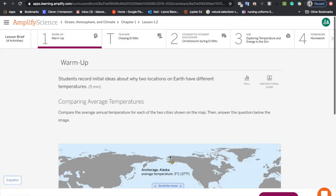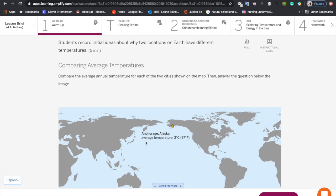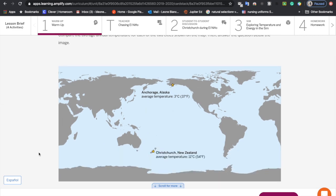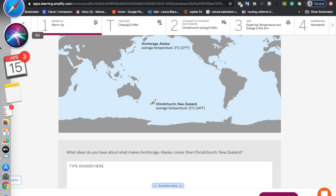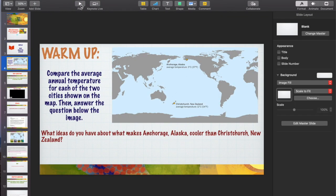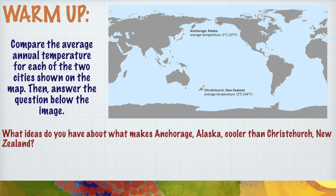We're going to start with the warm-up. At this time, I want you to compare the average temperatures for each of the two cities shown below, then answer the question below the picture. Compare the average temperature for each of the two cities shown on the map, then answer the question below the image: what ideas do you have about what makes Anchorage, Alaska cooler than Christchurch, New Zealand? We're going to be working with these two areas pretty frequently during this unit, and I want to point out some key ideas here.